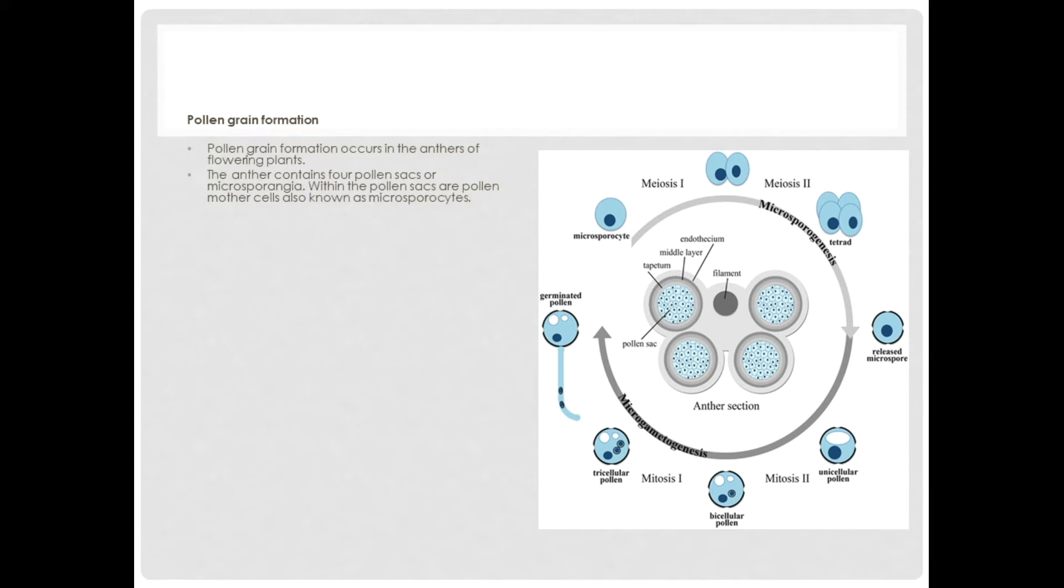The anther contains four pollen sacs or microsporangia, and within the pollen sacs are pollen mother cells known as microsporocytes. This is an anther and it contains four pollen sacs, and the cells within the pollen sacs are known as pollen mother cells.